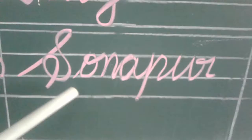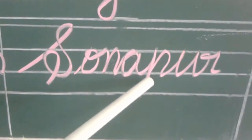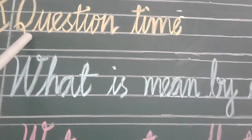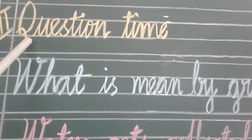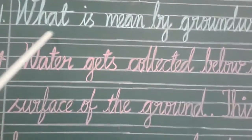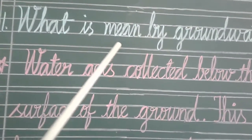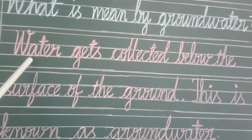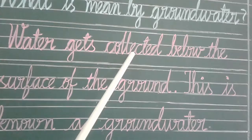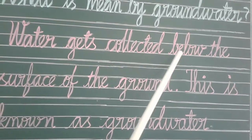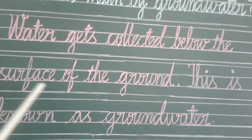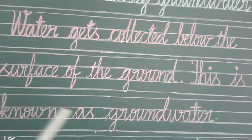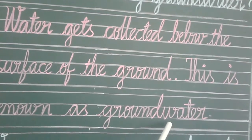Sonapur? S-O-N-A-P-U-R. Now, question time. What is meant by ground water? Water that gets collected below the surface of the ground is known as ground water.